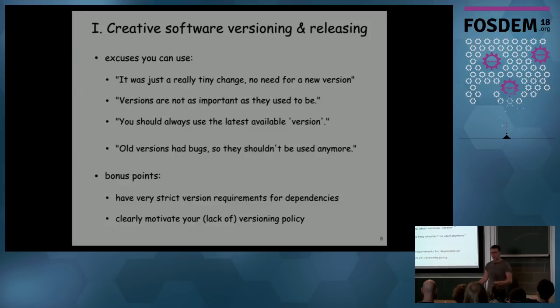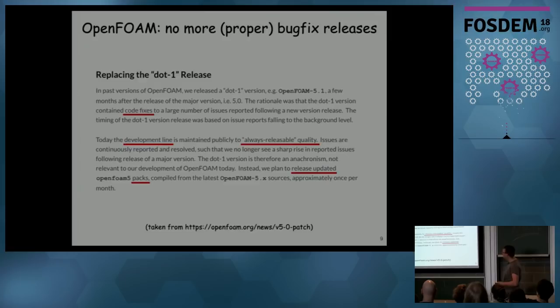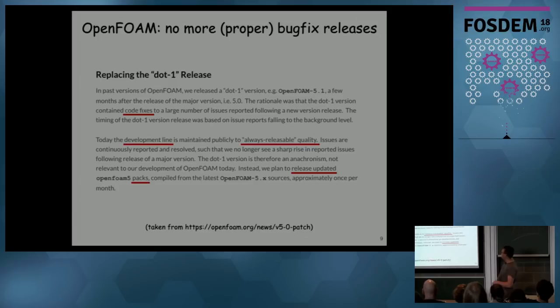So, examples: OpenFOAM — some people here know it. There are three variants. One of the OpenFOAM variants, the .org version, does this: they don't do proper bug fix releases anymore. They have a 5.0 version and they explain on the website that there will never be a 5.1. They just tell you there's a GitHub repository that gets all the updates — go there. Every now and then they have a link pointing to a commit, and they say: 'This is your bug fix release.'